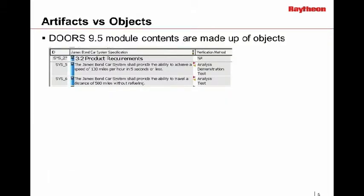Let's get into some of the similarities and differences between the two products. In DOORS 9, there's a concept of modules. You have folders and projects — typically for your program you've got a single project and folders within it to organize the data — and then you have modules. Within a module, you have objects. If you want to write a requirement, that's going to be an object in a module. Here's just a brief screenshot of a module, or a section of a module.